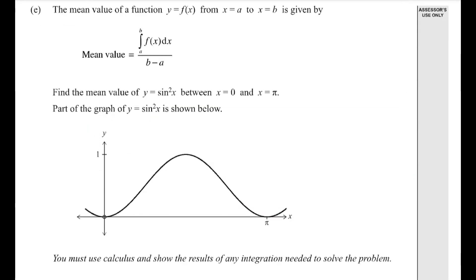On part e we've been given this function to work out the mean value of this graph below. We're told that it's the graph of y equals sine squared x, and we want to find the mean between 0 and pi. So the first thing is we're going to write it in this form for the integral, for working out the mean value, so using this formula up here.